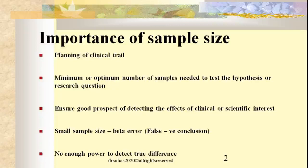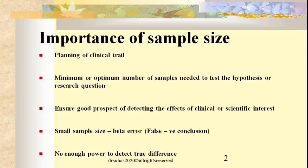We need to understand the sample size because it ensures a good prospect of detecting effects of clinical or scientific interest — whether to accept or reject a research hypothesis. If we study too few or too many samples beyond what is needed, both can lead to various types of decision-making errors in research, commonly called alpha and beta errors. The appropriate number of samples must be selected to prevent these errors and to properly test the hypothesis.